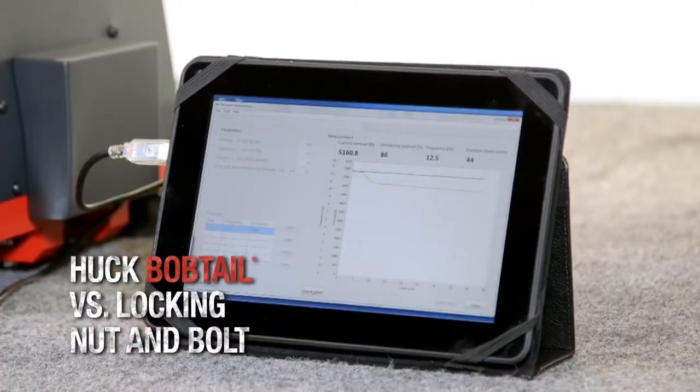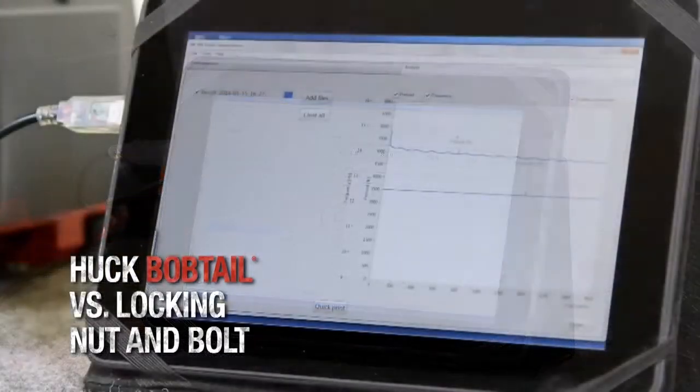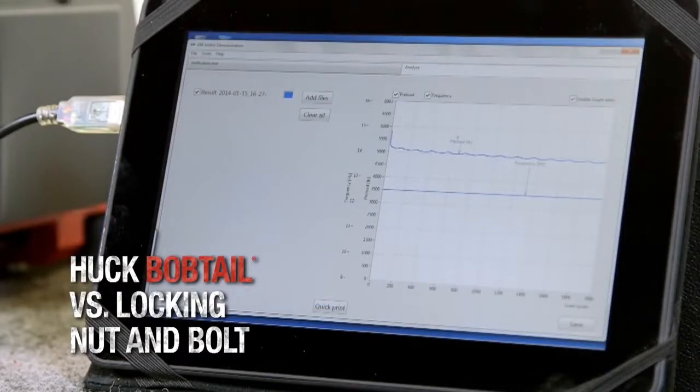After an extended period of time, the huck bobtail demonstrates superior clamp and vibration resistance. Because the bobtail is installed using direct tension, you can be sure structural integrity is secure.